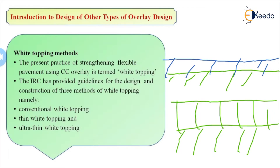In India, mostly the overlay is done by flexible pavement. We rarely do an overlay of rigid pavement, but in some metro cities where heavy traffic exists — where the PCU (Passenger Car Unit) of vehicles is more — we can use the rigid overlay over the rigid or flexible pavement.